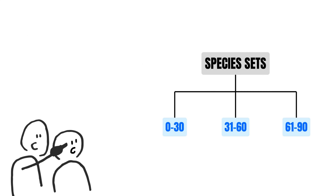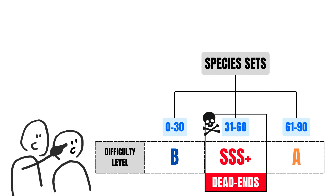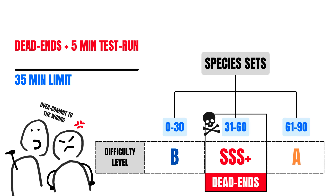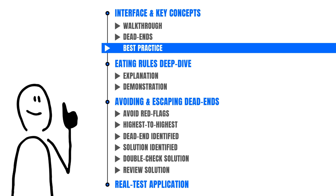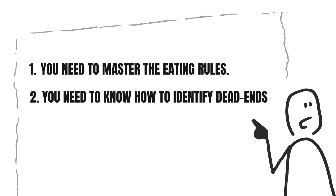It's a known fact that not all species sets are equal in difficulty. Some are so difficult that you cannot create a food chain from them no matter how hard you try — I call such species sets dead ends. Coupled with the fact that it takes five minutes to test run each food chain, the 35-minute limit might turn out to be very short if you overcommit to the wrong species set. To get out of such situations: one, you need to master the eating rules — that's the only way to test run food chains fast and find suitable species quickly. Two, you need to know how to identify dead ends so you don't overcommit.